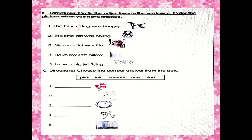The adjective is black. Question number two: The little girl was crying. The little girl was crying. The adjective is little. Question number three: My mom is beautiful. My mom is beautiful. The adjective here is beautiful. Very good. Question number four: I love my soft pillow. I love my soft pillow. The adjective here is soft.